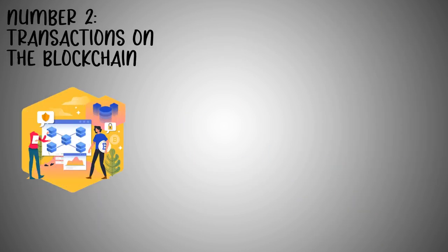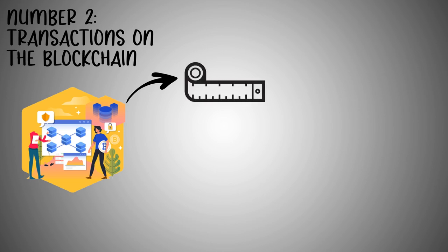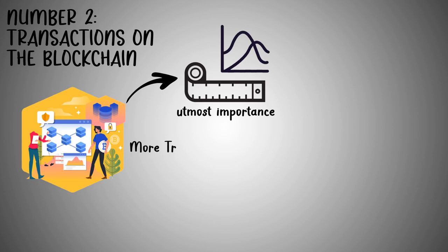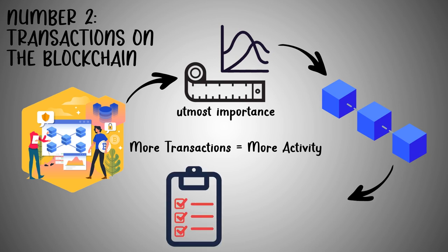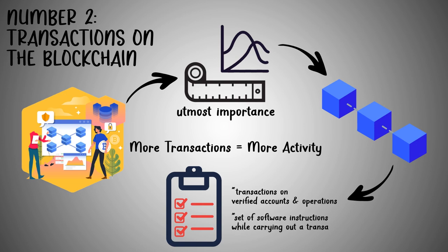Number two: transactions on the blockchain. For analysts, measuring real activity on the blockchain network is of utmost importance — the more transactions, the more the activity. Blockchain analysts take note of real human activities, such as transactions on verified accounts and operations, such as a set of software instructions while carrying out a transaction. By segregating the two, analysts figure out actual activity on the blockchain.